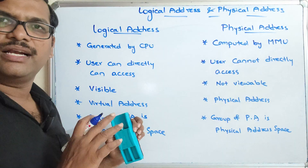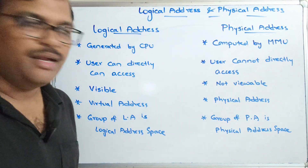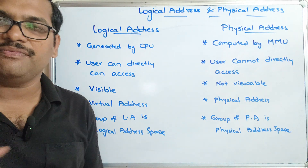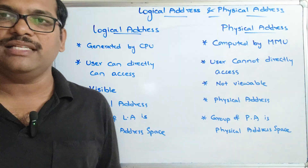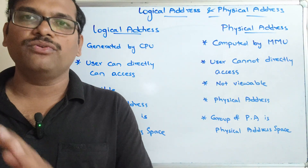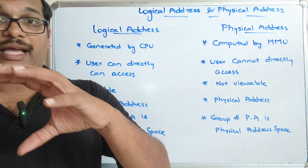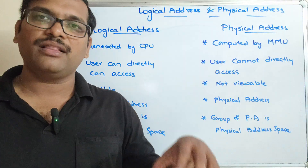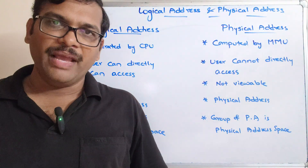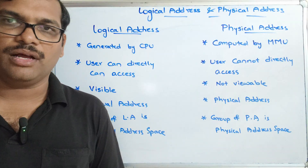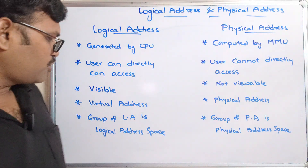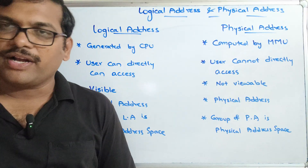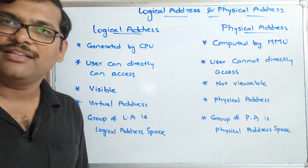So these are the differences between the logical address and the physical address. The key concept is: whenever a program needs to be executed, it must be loaded into main memory. The address stored in secondary memory is called the logical address, and the address where the program is stored in main memory is called the physical address. If you enjoyed the session, please like, share with your friends, and don't forget to subscribe to our channel. Thanks for watching!